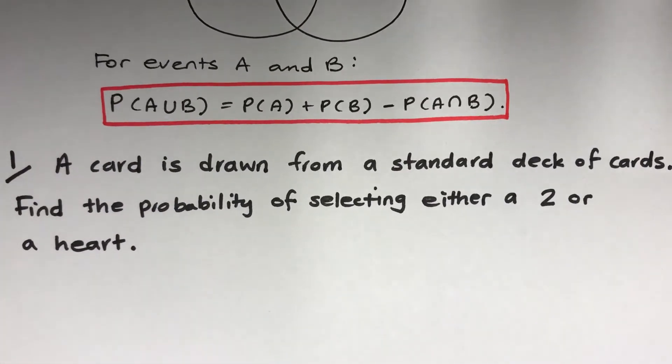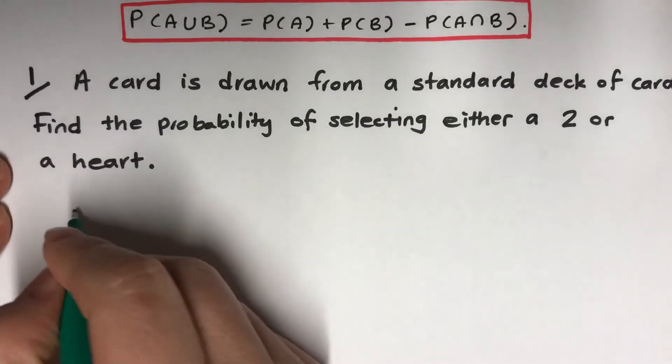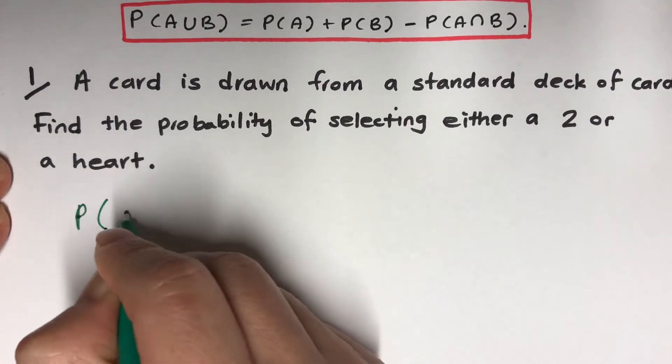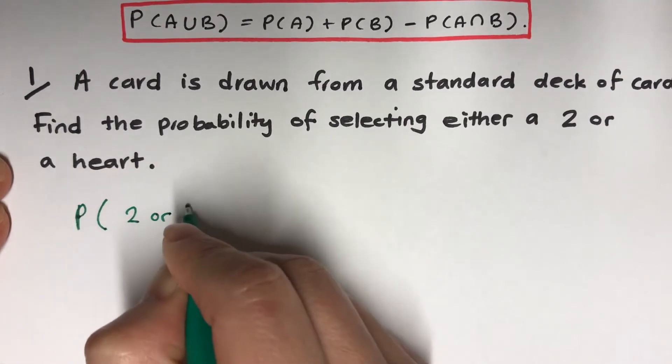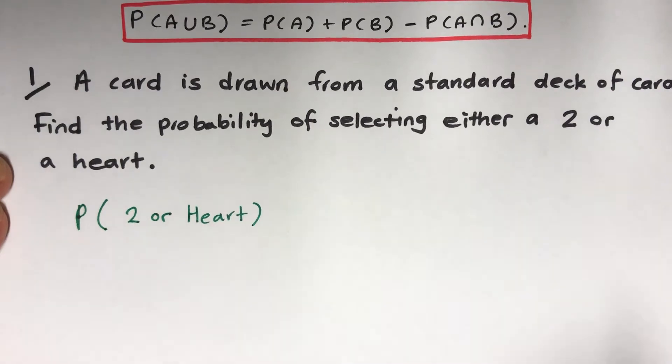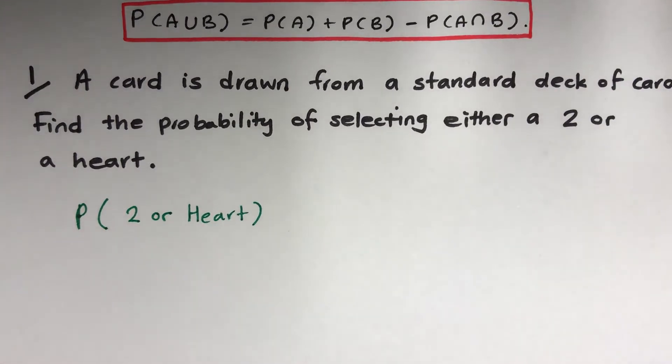A card is drawn from a standard deck of cards, which is 52 of them. Find the probability of selecting either a 2 or a heart. So, probability of 2 or heart. Remember RUFF guys: Read the question, Understand the question, Filter the question, and then think about the right formulas, tools, and solve it.